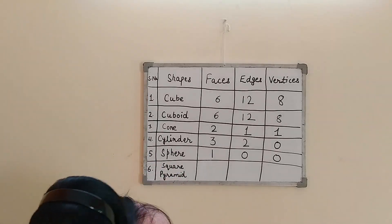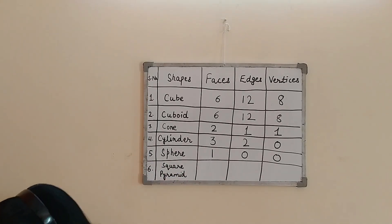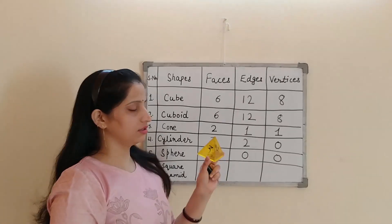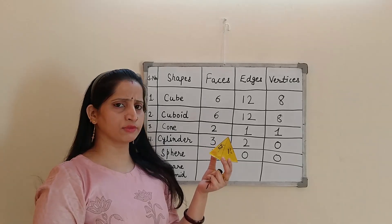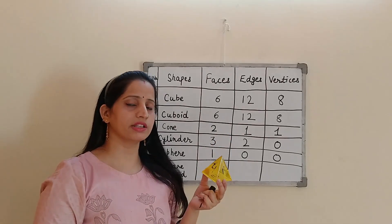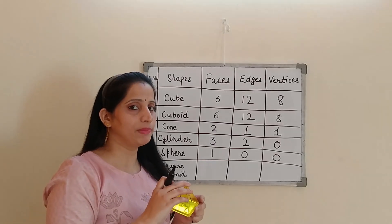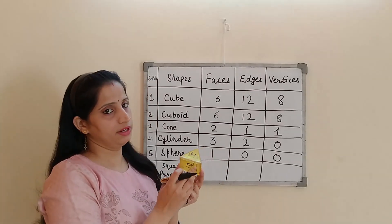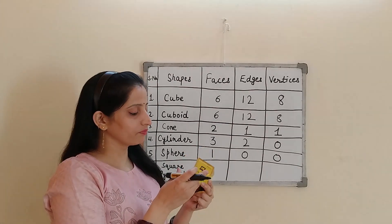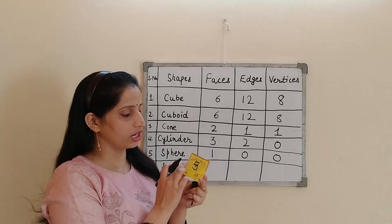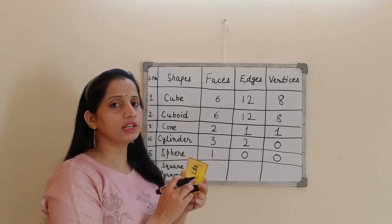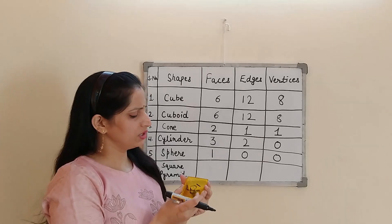So now we will move on to pyramid. I have a pyramid also. See, this is the pyramid. There are many types of pyramid like triangular pyramid, square pyramid. The name of the pyramid basically depends on the base of the pyramid. In this pyramid, the base is square in shape. That's why we call it square pyramid.